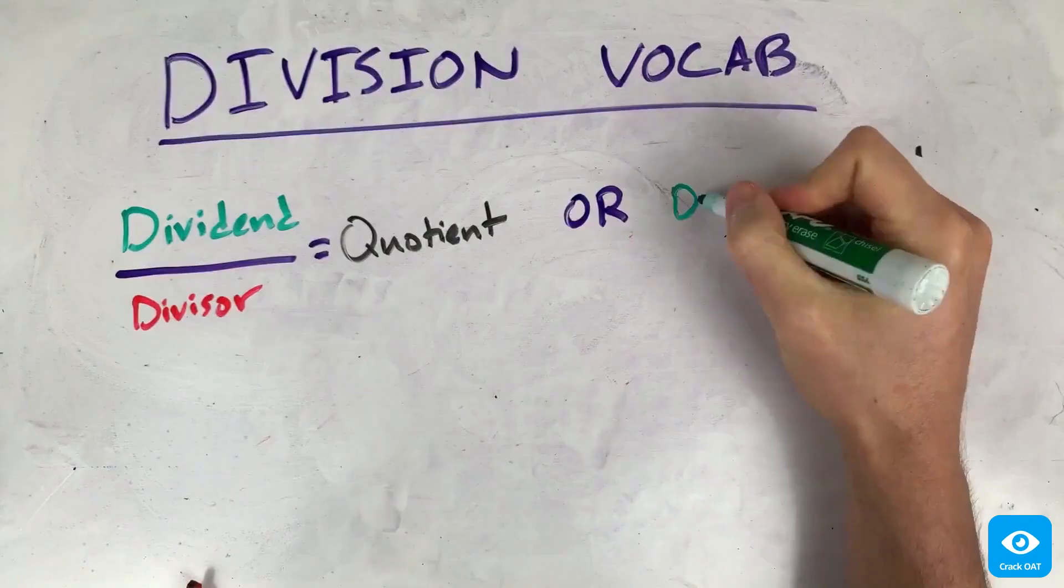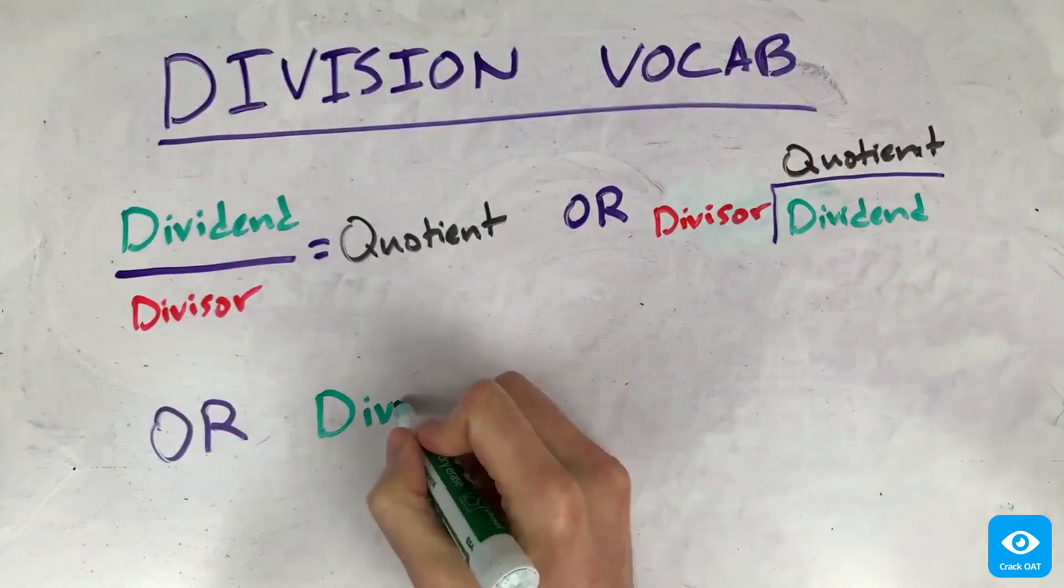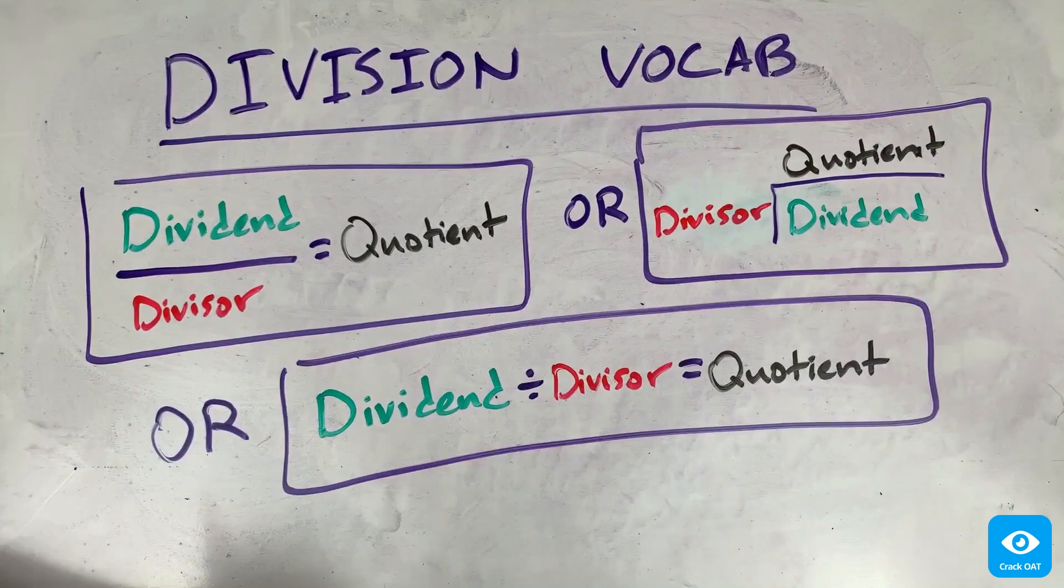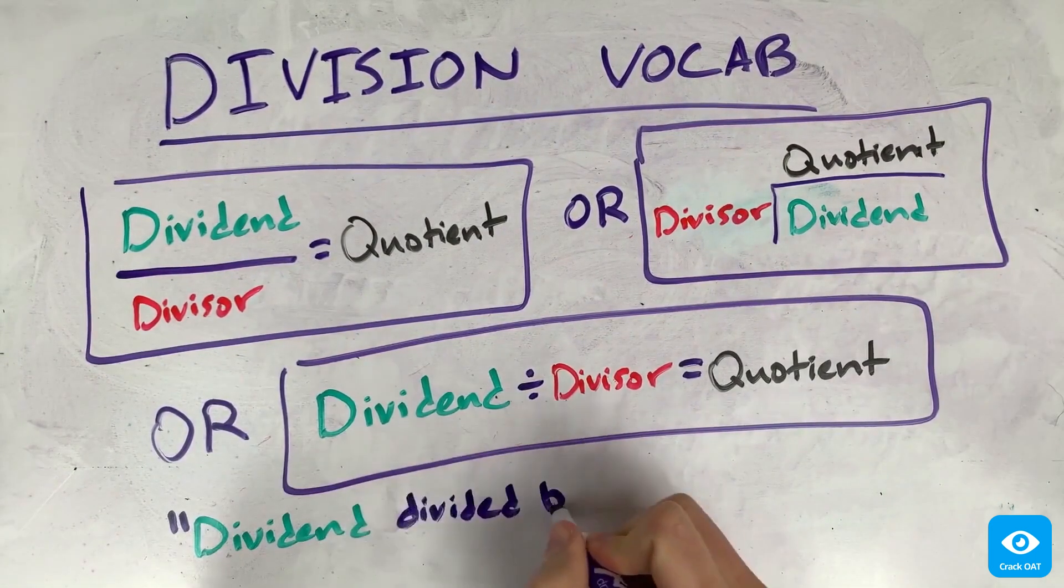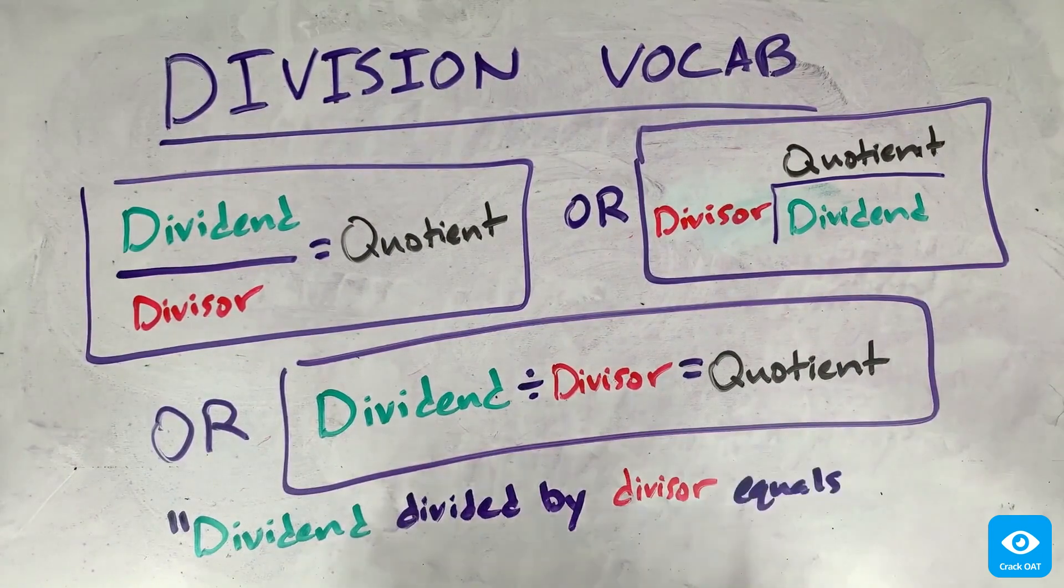Written out, the division problem could look like any of these three ways to write division. In each case, however, the symbols are saying that the dividend divided by the divisor equals the quotient.